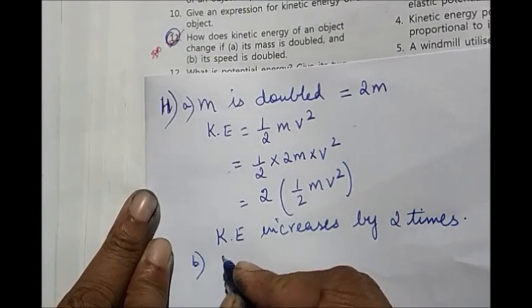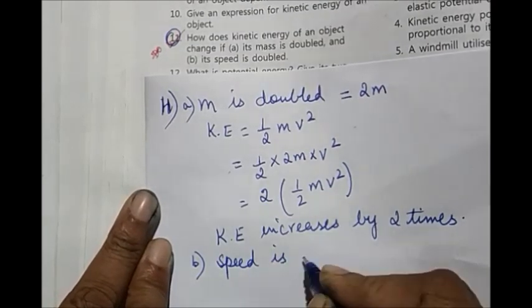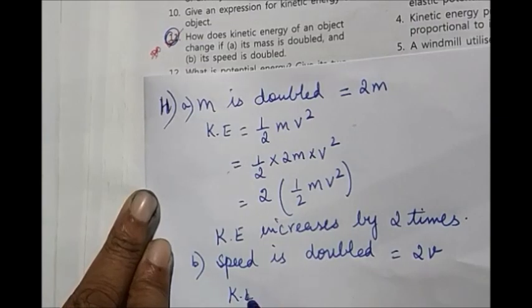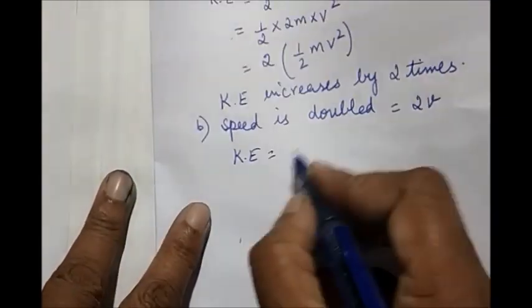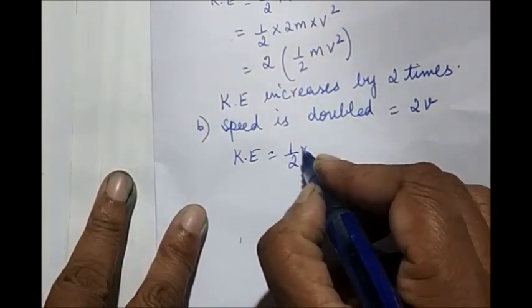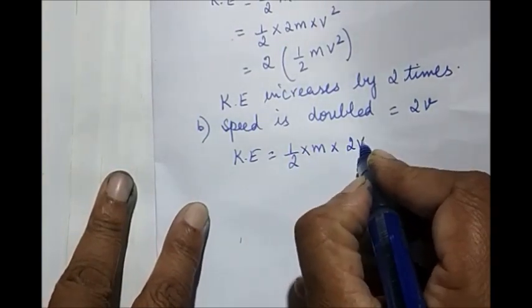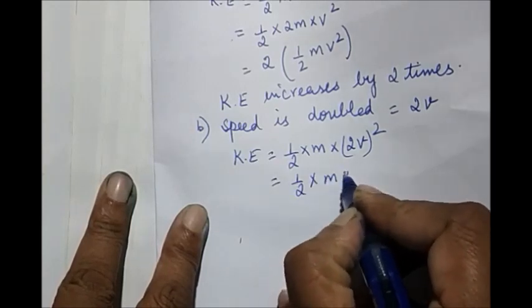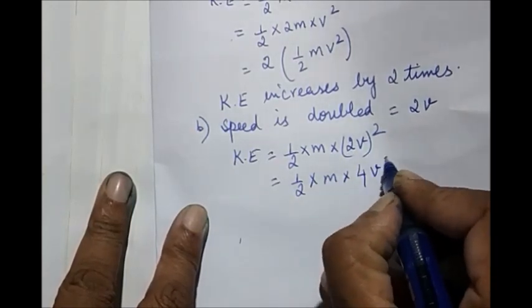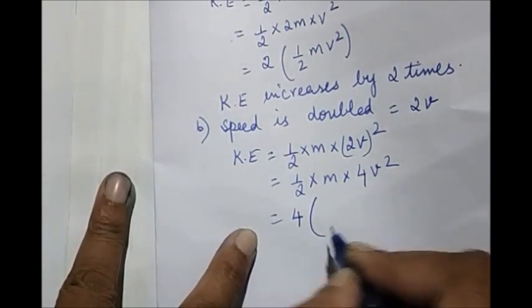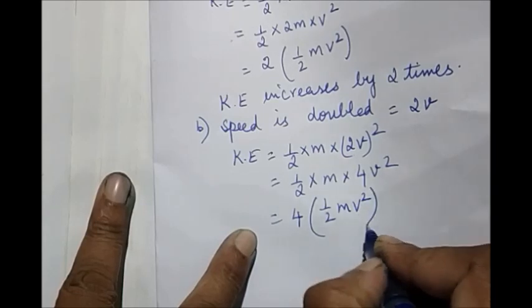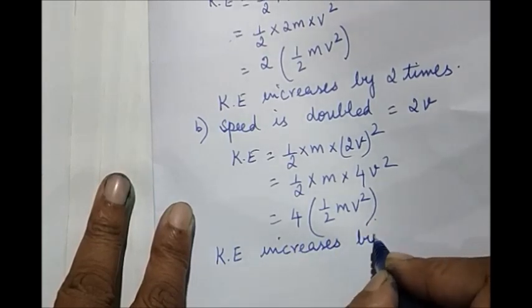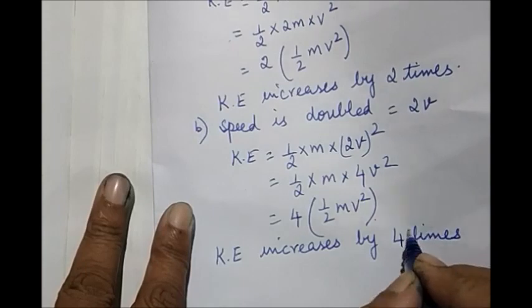B part, speed is doubled. That means velocity becomes 2v. So what happens to your kinetic energy formula? Half into m into 2v the whole square. It will become half into m, 2 square that is 4v square. Take this extra term outside. So 4 into half m v square. The conclusion is kinetic energy increases by 4 times.